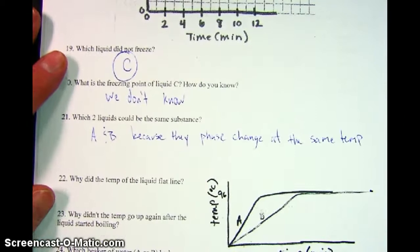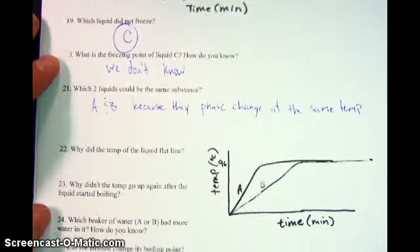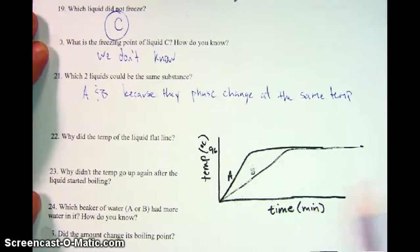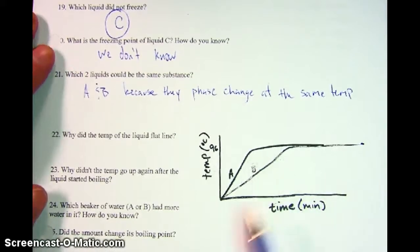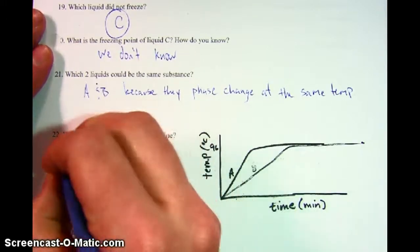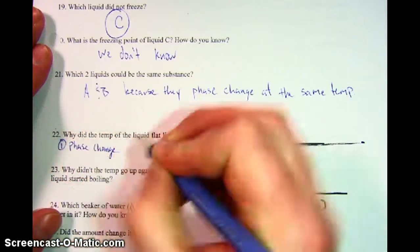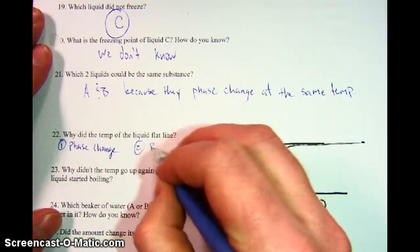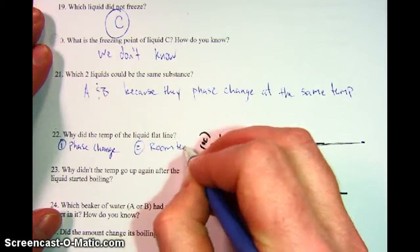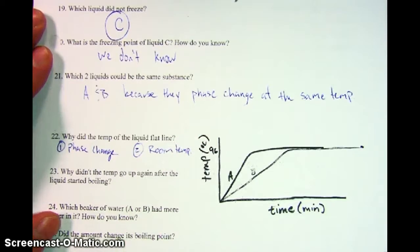Number 22, why did the temperature of the liquid flatline? Now we're talking about this new graph off to the right on your screen. The reason why the temperature flatlines is because of two reasons. Reason number one, phase change. Reason number two, room temp. It could be either of those. We don't have enough data for sure to make a judgment call.